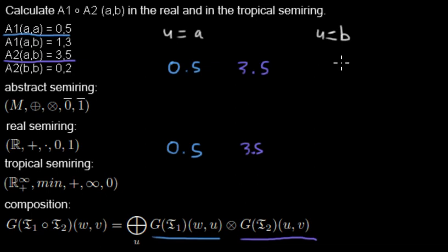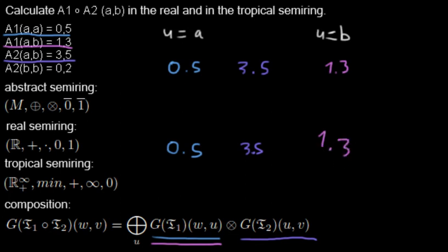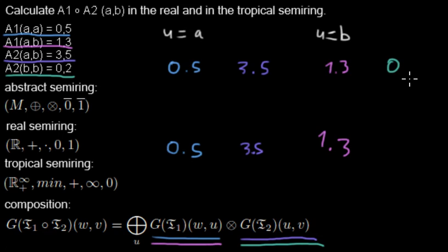Now let's retrieve the weights for U=B. In the first transducer, when we put in A and want to get out B, that corresponds to weight 1.3. Then for the second weight, from the second transducer where we put in U=B and want to get B out, that corresponds to weight 0.2.